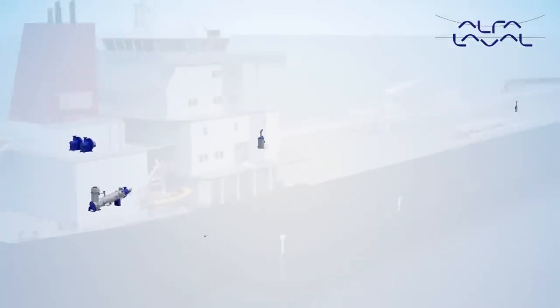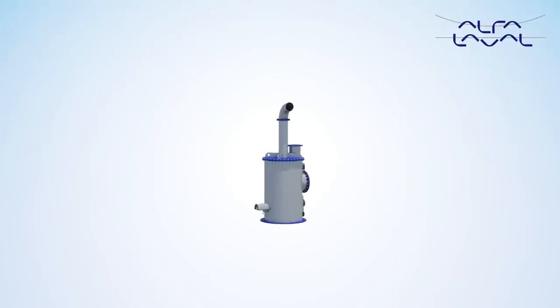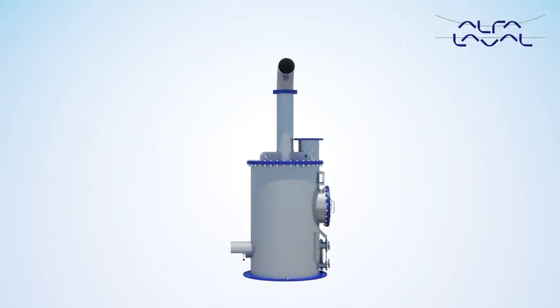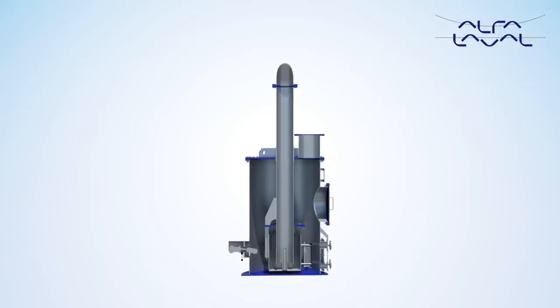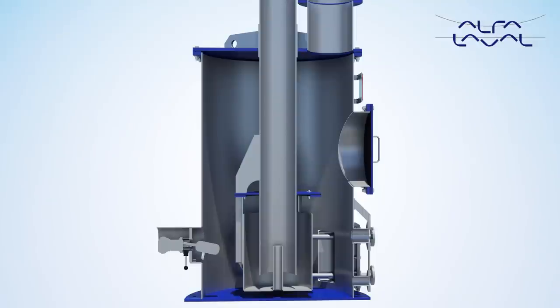The inert gas line is the only way that vapors coming from the cargo could theoretically enter the engine room. This must be avoided at all costs. To make sure that it never happens, the deck water seal is placed in between, making it a very important safety layer on the ship. The deck water seal is essentially a container of water in which the incoming inert gas line is submerged. The deck water seal is not dependent on electricity for its function and can thus also serve its purpose during blackouts.